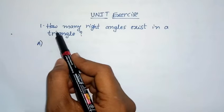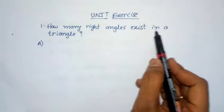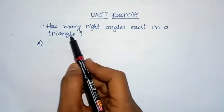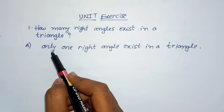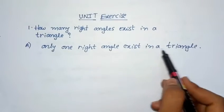First problem: how many right angles exist in a triangle? Only one right angle exists in a triangle.